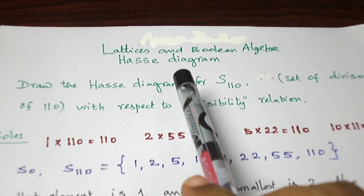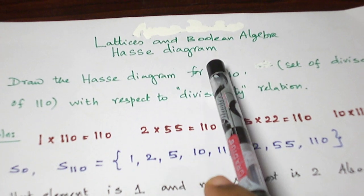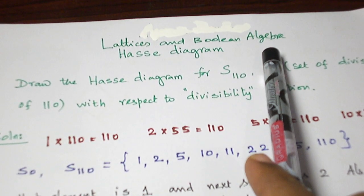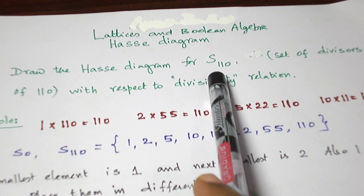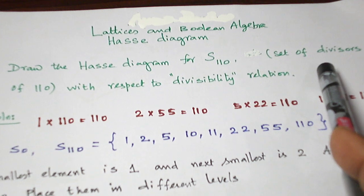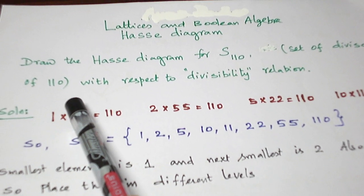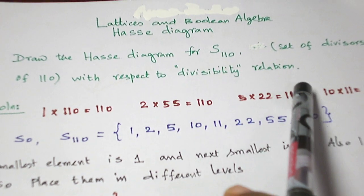Hello students, today let us see a question from the topic Hasse Diagram from the chapter Lattices and Boolean Algebra. This is the question: draw the Hasse Diagram for S110. S110 denotes the set of divisors of 110, and this Hasse Diagram should be drawn with respect to the relation divisibility.